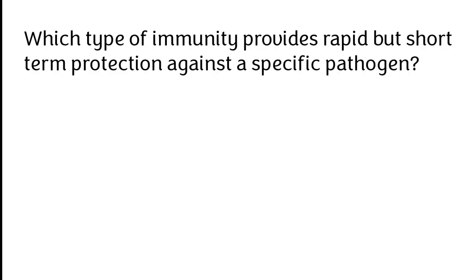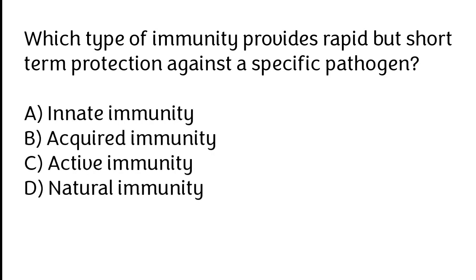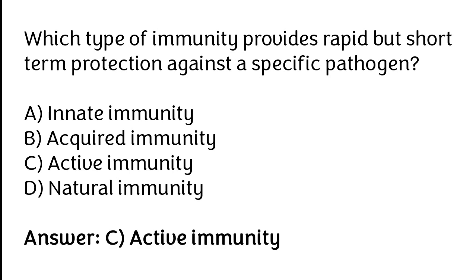Which type of immunity provides rapid but short-term protection against a specific pathogen? Innate immunity, acquired immunity, active immunity, natural immunity. The correct answer is option C. Active immunity is the type of immunity which provides rapid but short-term protection against a specific pathogen.